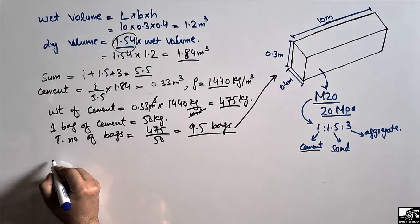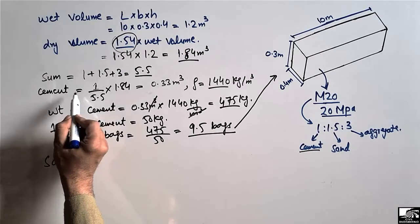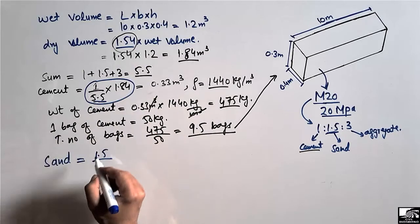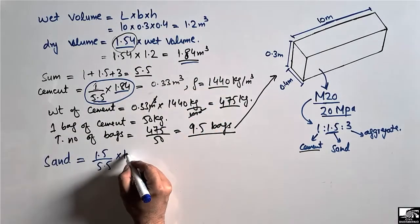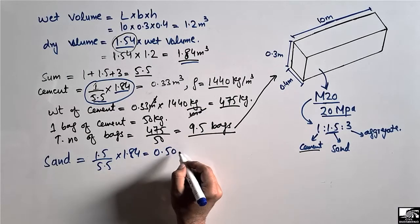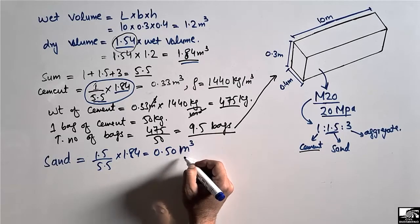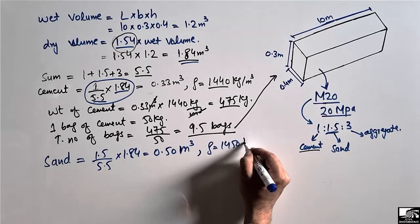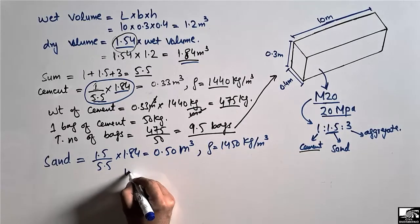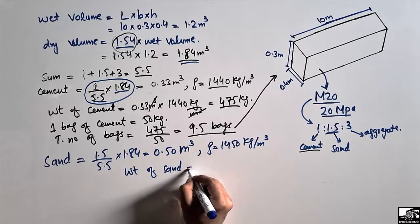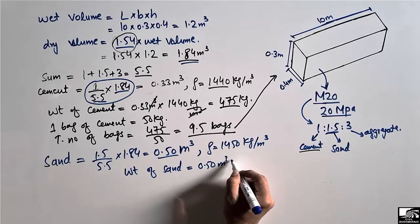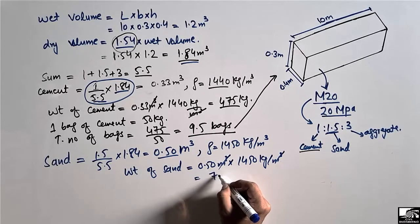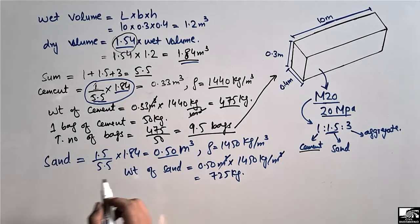For sand quantity, using the same formula: sand ratio divided by total ratio, multiplied by dry volume — that is 1.5 divided by 5.5, multiplied by 1.84 — we get 0.50 cubic meters. The density of sand is 1450 kg/m³, so the weight of sand equals 0.50 multiplied by 1450, giving 725 kilograms of sand.